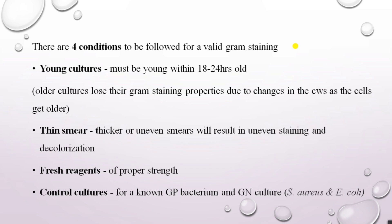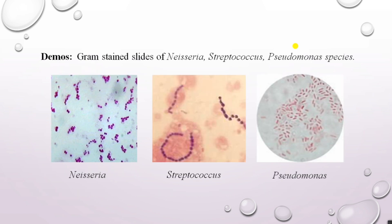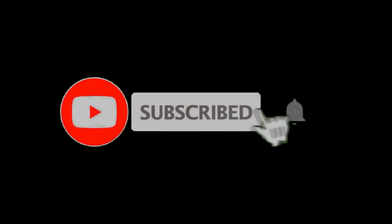As a gram positive quality control, Staphylococcus aureus ATCC strains are used. In this picture you can see gram stain slides of Neisseria, Streptococcus, and Pseudomonas species. Neisseria and Streptococcus are gram positive cocci — note the arrangement differs, with Streptococcus arranged in chains — and they appear purple. Pseudomonas is a gram negative bacterium and appears pink. That is about today's class. Thank you.